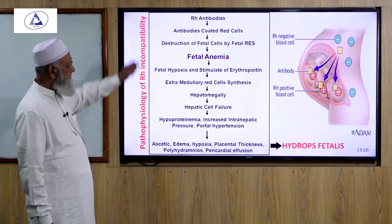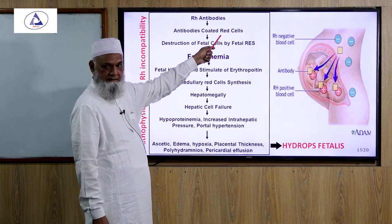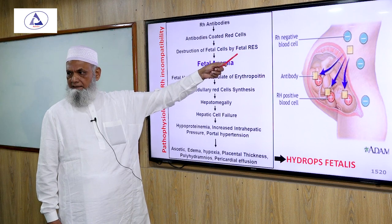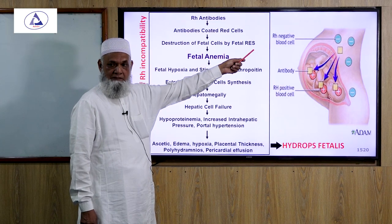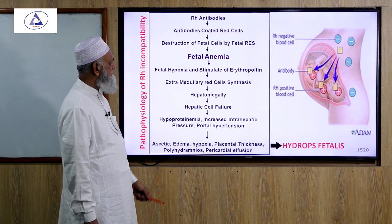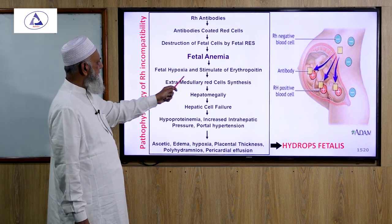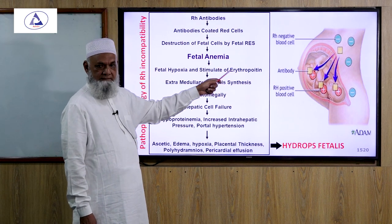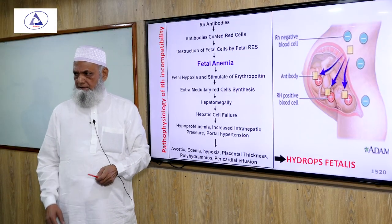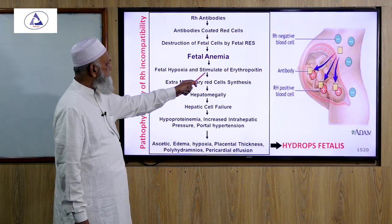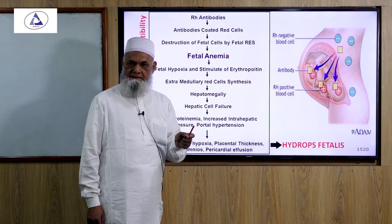Pathophysiology of Rh incompatibility: Rh antibodies coat fetal red cells, leading to their destruction via the reticuloendothelial system (RES) or mononuclear phagocytic system (MPS). This causes fetal anemia. Fetal hypoxia then stimulates erythropoietin production — from the kidney and to some extent the liver — due to reduced oxygen-carrying capacity from decreased hemoglobin.